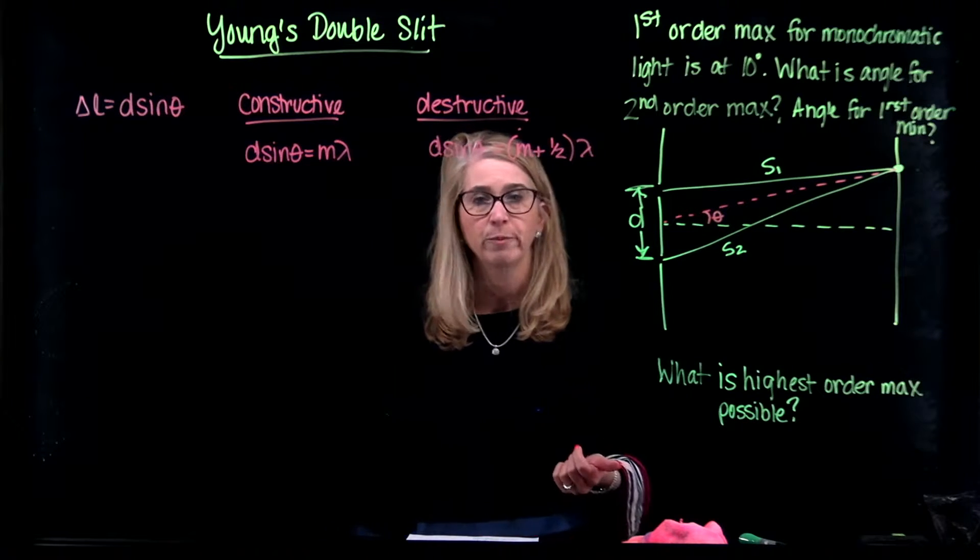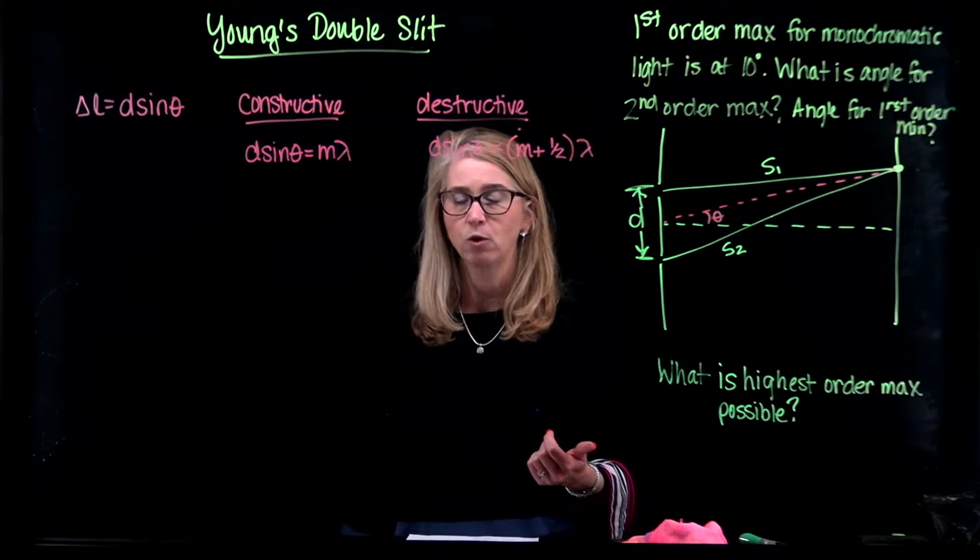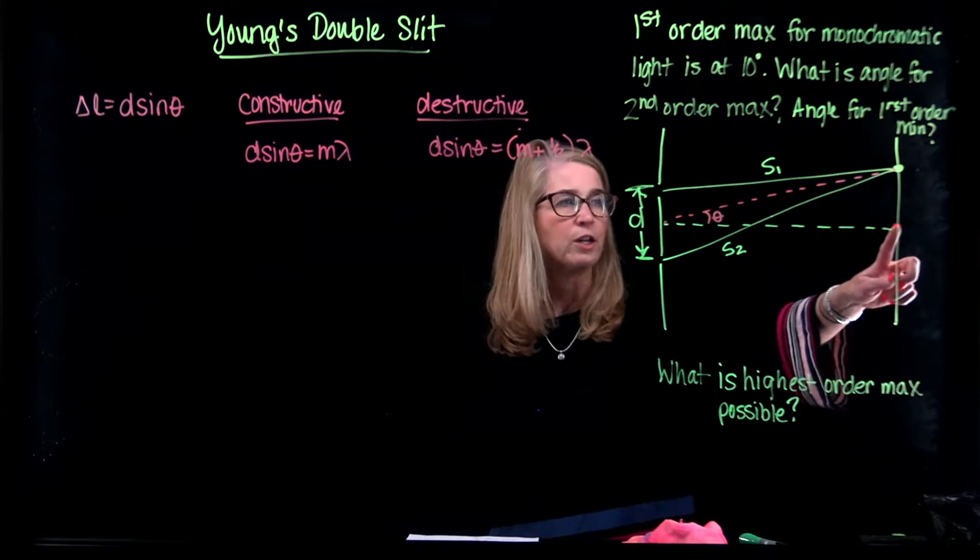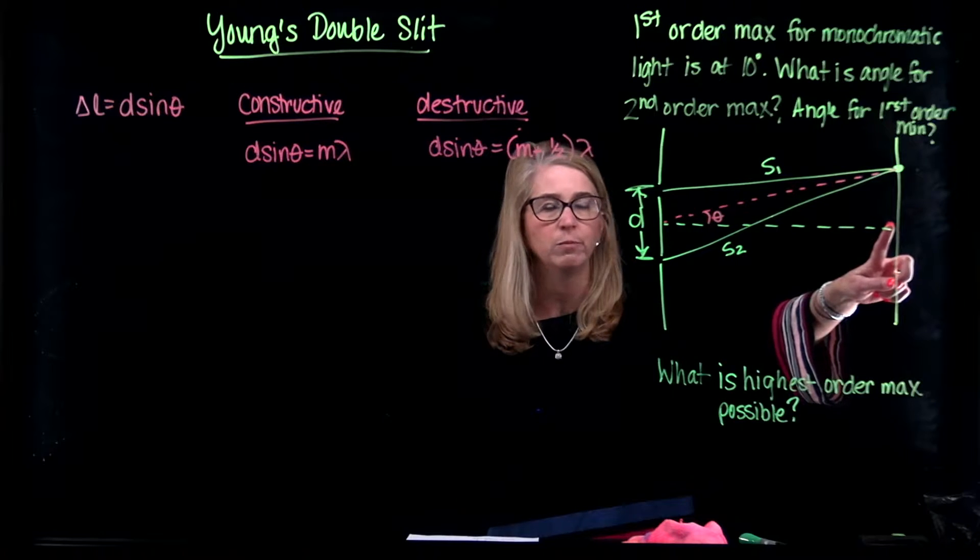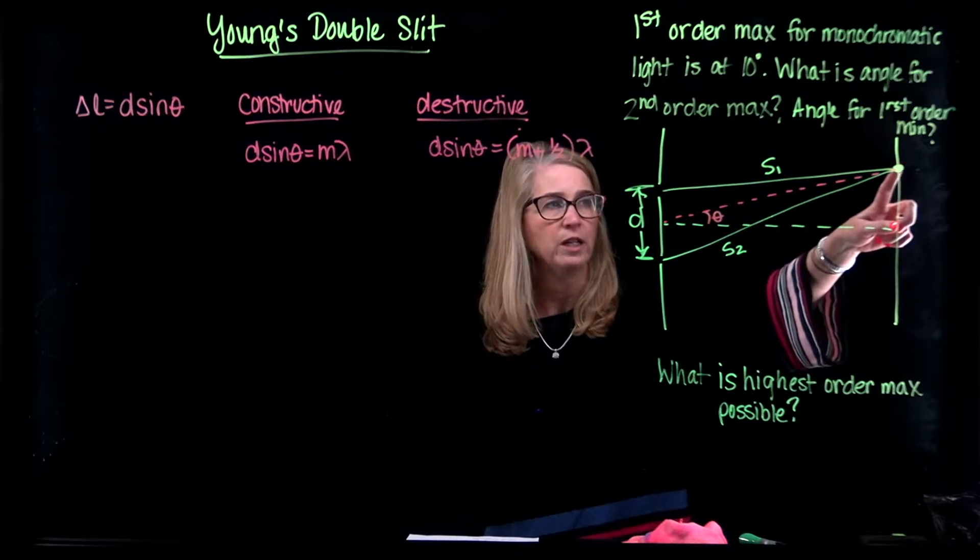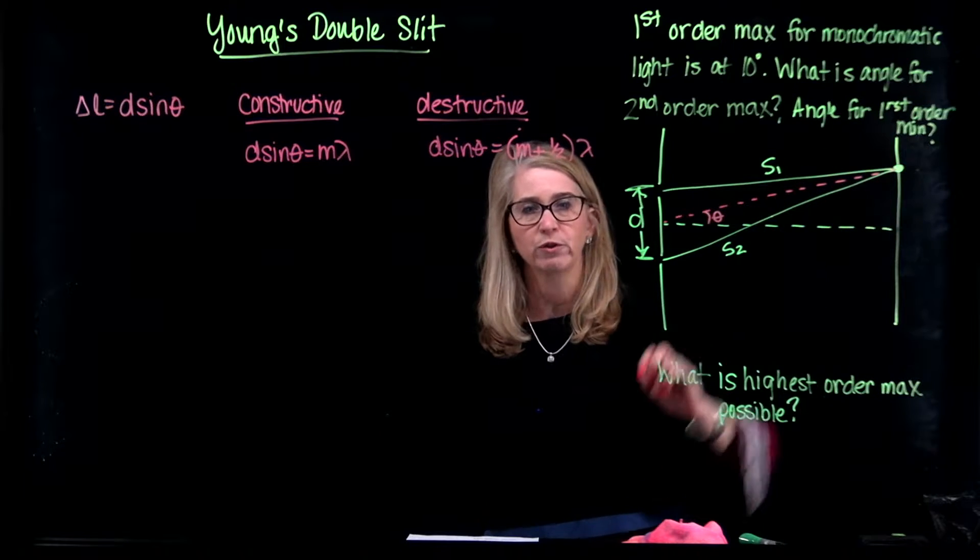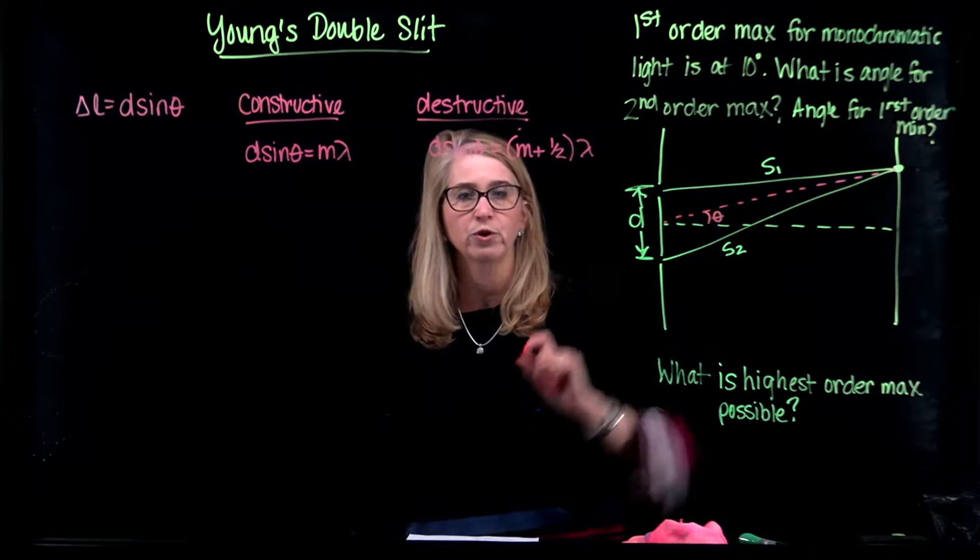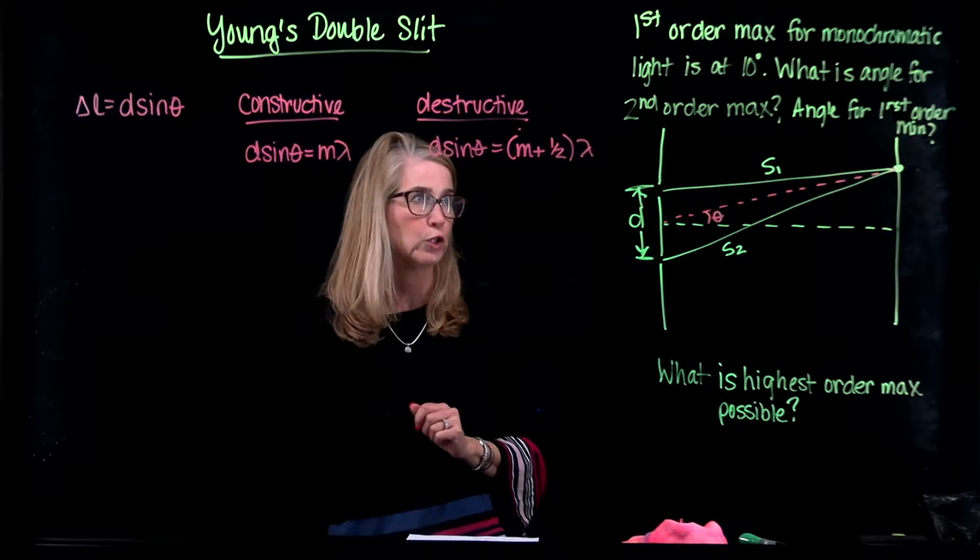So we're told the light is monochromatic so that means it only has a single wavelength. And the first order max, the zero order max would be straight in the middle of the two openings, that would be right here. So we're saying the next bright spot, which is the first order spot, is at an angle of 10 degrees. And here we're showing what that 10 degrees looks like.